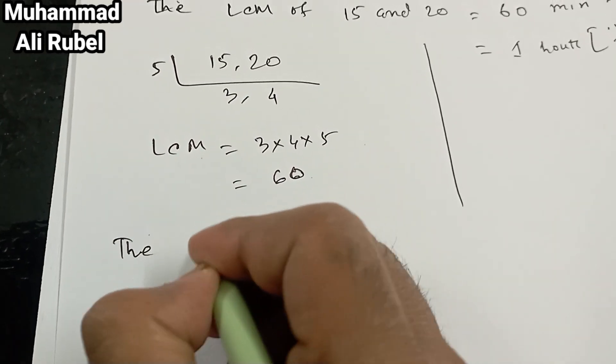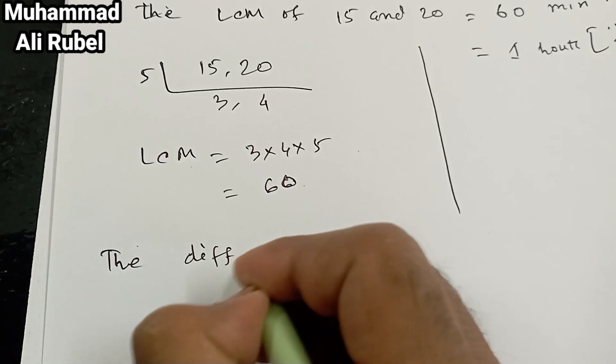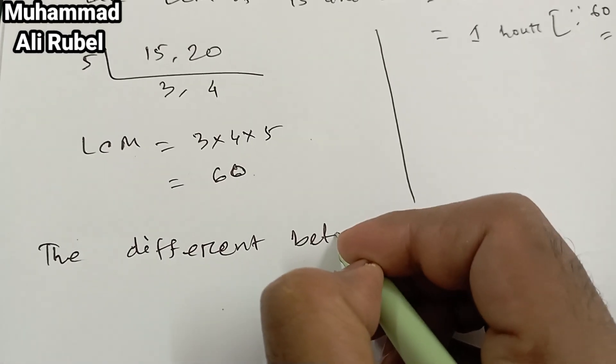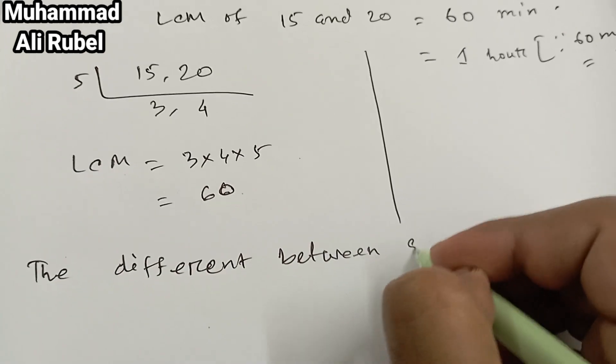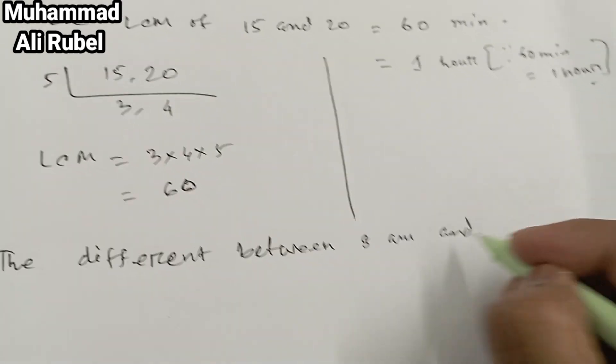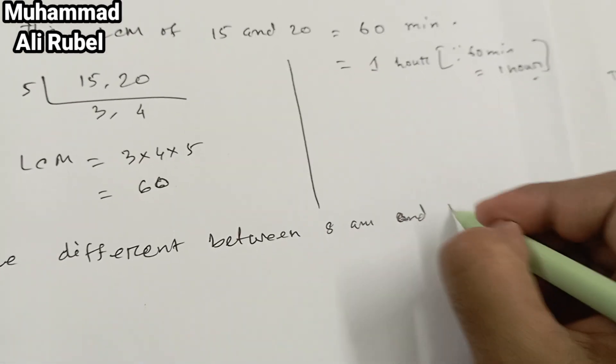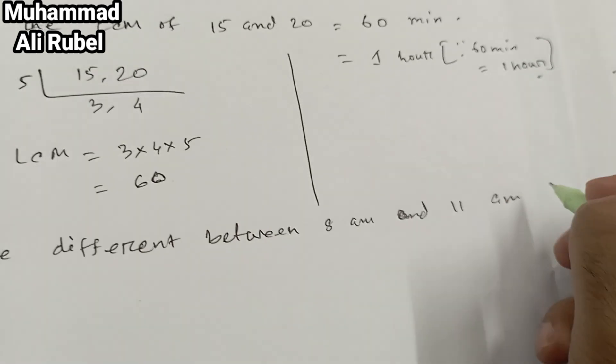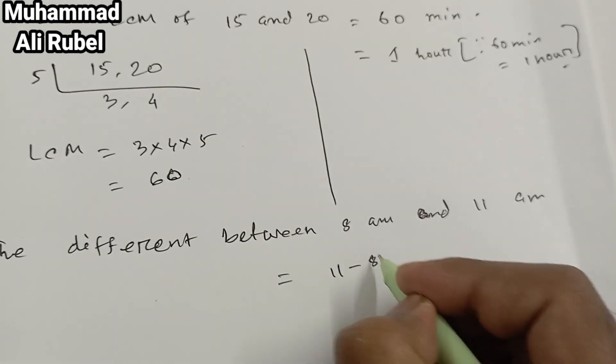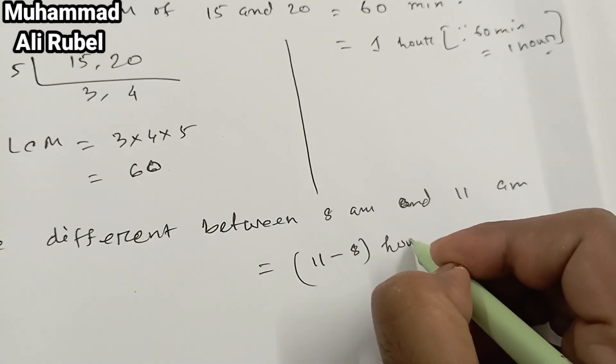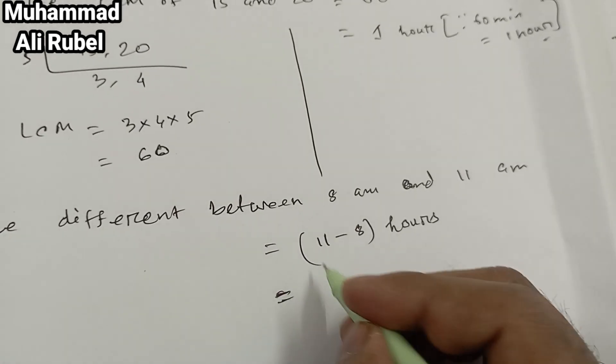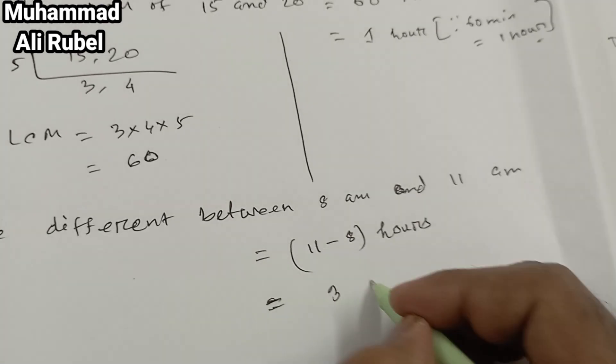The difference between 8 AM and 11 AM equals 11 minus 8 hours, so we get 3 hours.